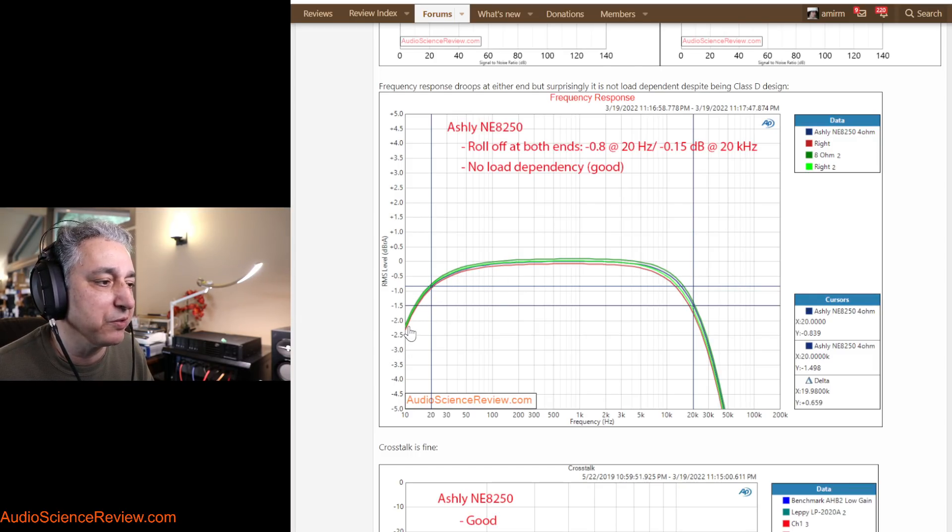And then same with bass. It rolls off down to two or three dB at 10 hertz. So as a subwoofer amp, you'll have to compensate for that if you were going to use it for that.